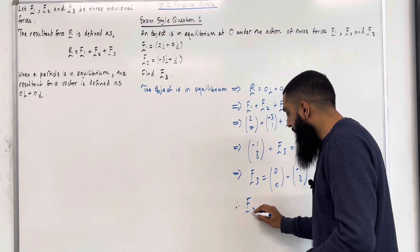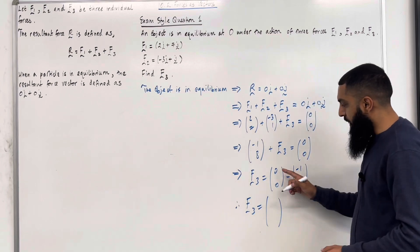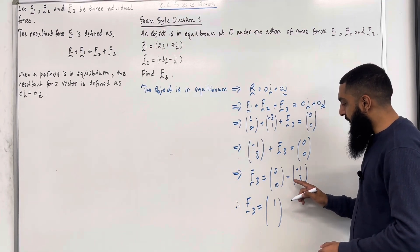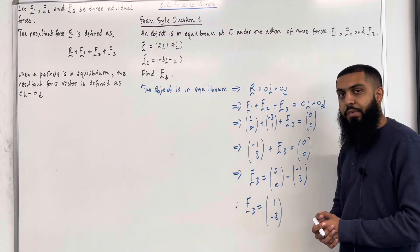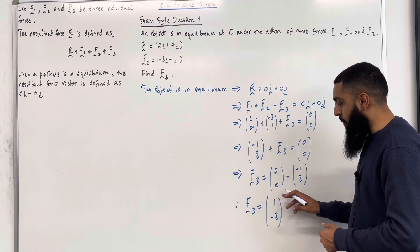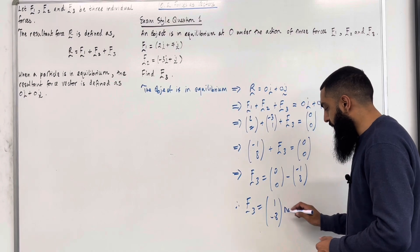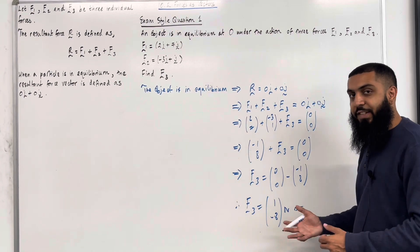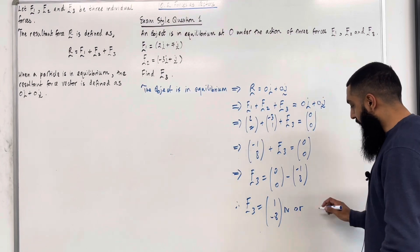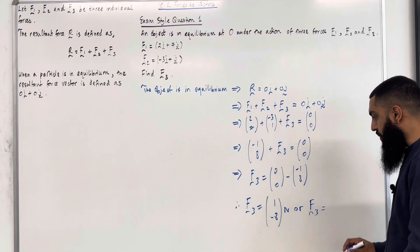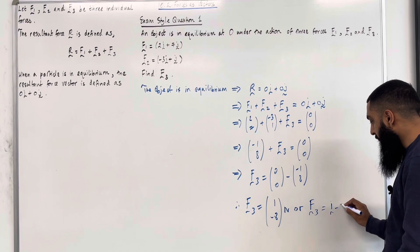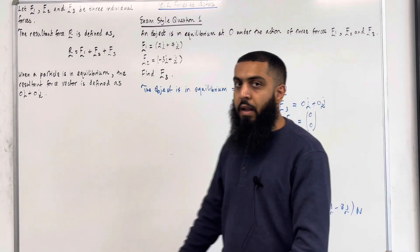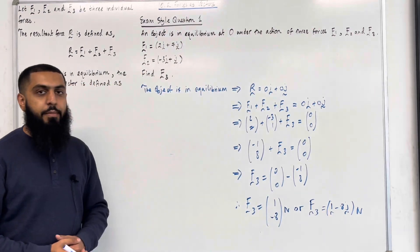Therefore, F3 is equal to 0 minus 1, 0 plus 1, which is 1. 0 minus 8 is minus 8. Hence, F3 is equal to the column vector 1 minus 8 N. Or, you can write this in IJ notation, so F3 is equal to I minus 8J Newtons. That there, ladies and gents, completes exam style question 1.